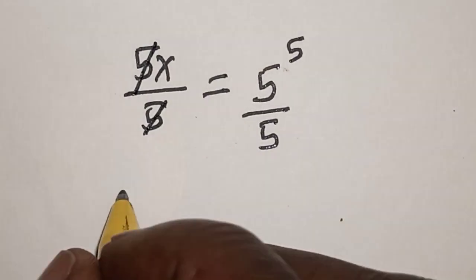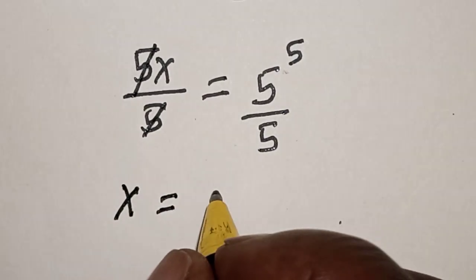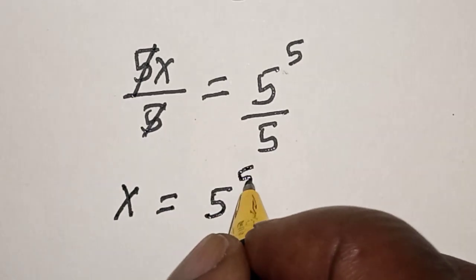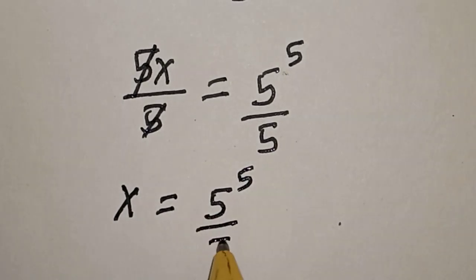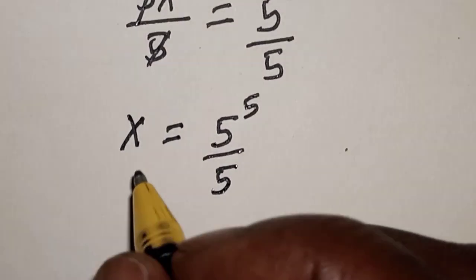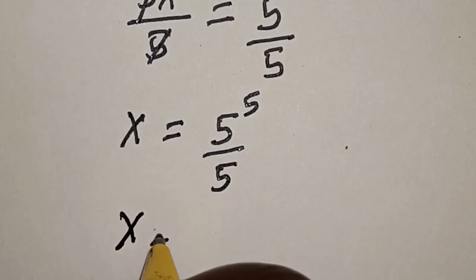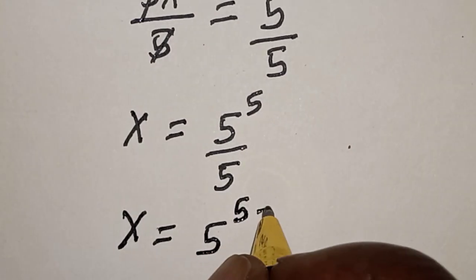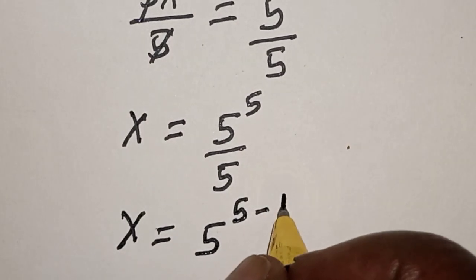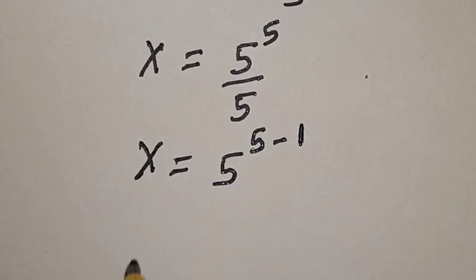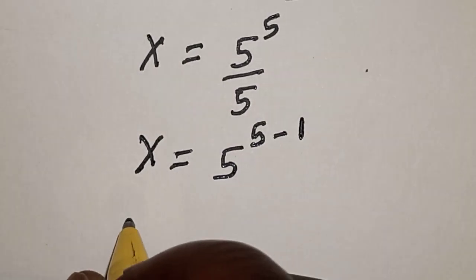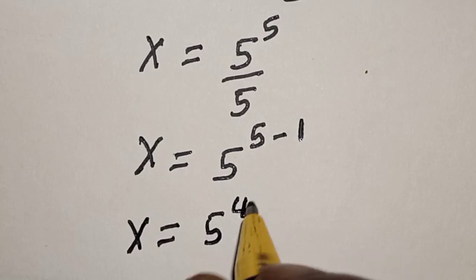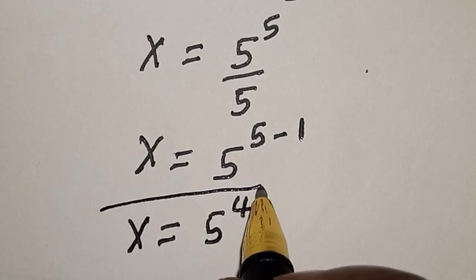Then we have s is equal to 5 raised to power 5, which is equal to 5 raised to power 5 minus 1. Therefore, s is equal to 5 raised to power 4. That is our final answer.